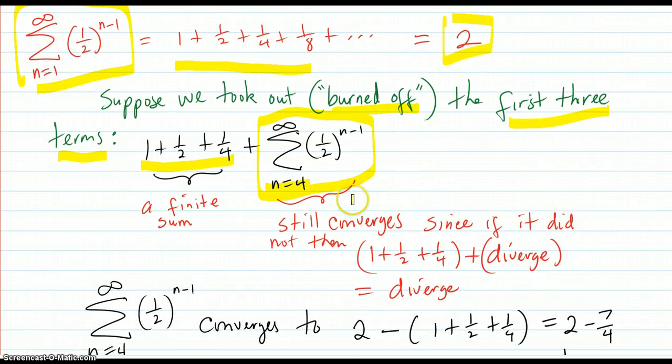Let's analyze what's happening. Well, it still converges, maybe to a different number now since we took out these three. Because if it diverged, then one plus a half plus a fourth plus this divergent part would end up diverging. Anything that diverges and you add something to it still diverges. And that's a contradiction.